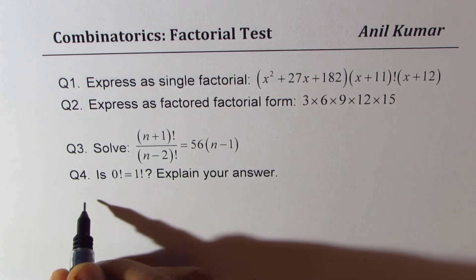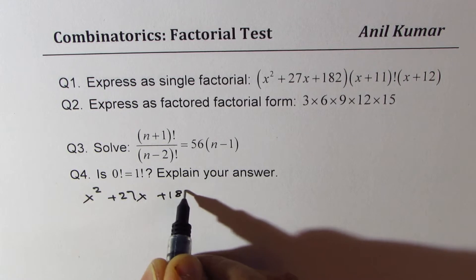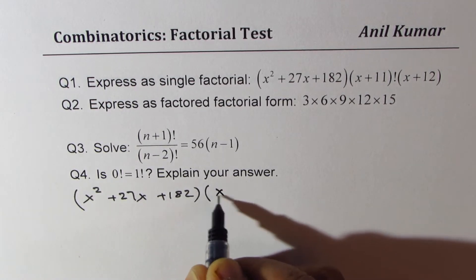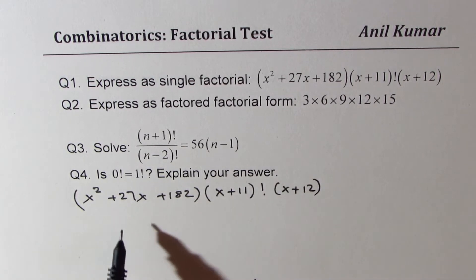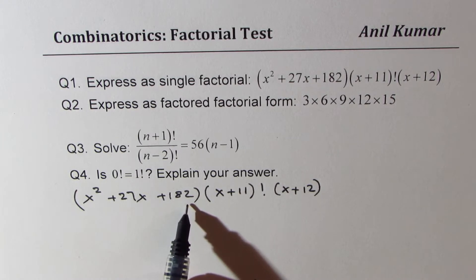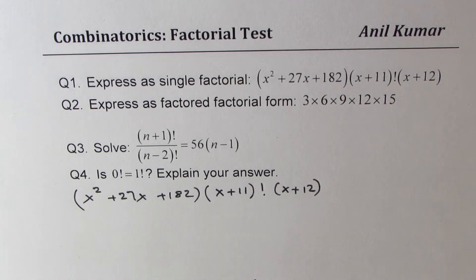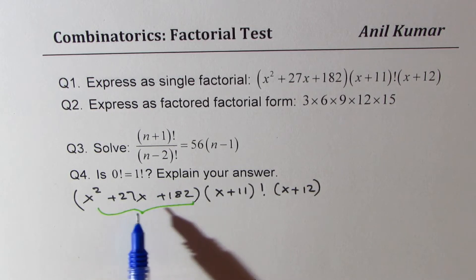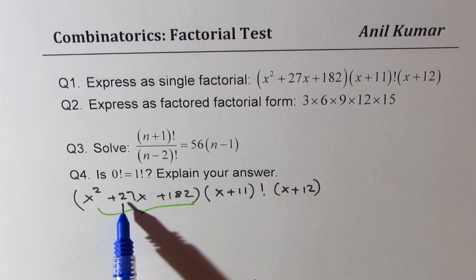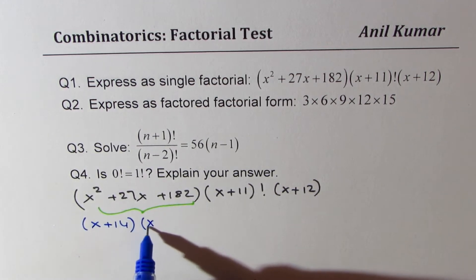Here is the solution to question number one: x squared plus 27x plus 182, times x plus 11 factorial, times x plus 12. Now, this expression, which is a quadratic trinomial, can be factored. 13 times 14 is 182, and when you add 13 and 14, you get 27. So I could write this as x plus 14 times x plus 13.